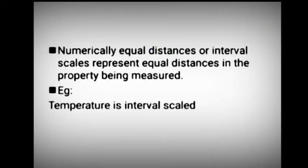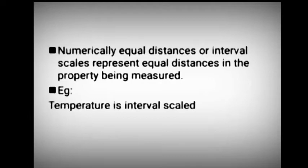Equal distances on interval scales represent equal distances in the property being measured. For example, temperature is interval scaled. It has the features of the nominal scale and the ordinal scale, and the distance between categories is the same.